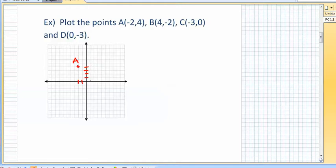For example, b, four, negative two. Negative two means go down two. So it's right there. There's b. c is negative three, zero. There's negative three, zero. It means it's going to be on the axis. And then d is zero, negative three. Right there.